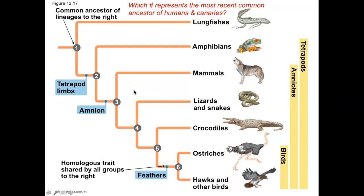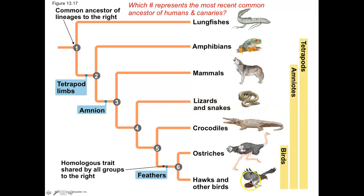For example, tetrapod limbs — four limbs — evolved at a particular node on the tree. Everything descending from that common ancestor has four limbs: amphibians like frogs, mammals, lizards, crocodiles, ostriches, and birds. Snakes lost their limbs, but lizards still have them. Lungfishes, which branched off earlier, never evolved four limbs — they're more like eels. The amnion evolved next, and then feathers appeared on a later branch, so crocodiles don't have feathers but birds do.